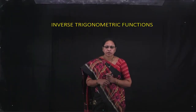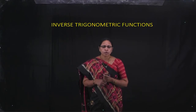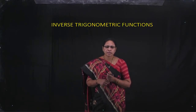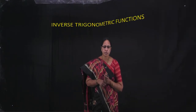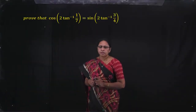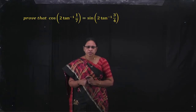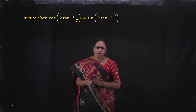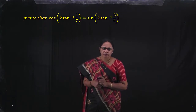Hello everyone. In this session I am going to continue the problems in the chapter inverse trigonometric functions. See the first problem: prove that cos of 2 tan inverse 1 by 7 is equal to sin of 2 tan inverse 3 by 4.